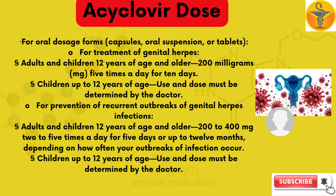For oral dosage form — capsules, oral suspension or tablets — for the treatment of genital herpes: adults and children 12 years of age and older, 200 mg five times a day for 10 days. Children up to 12 years of age: use and dose must be determined by the doctor.